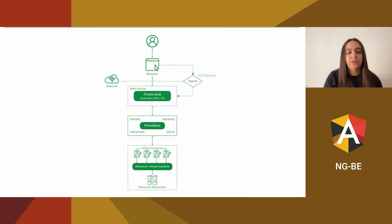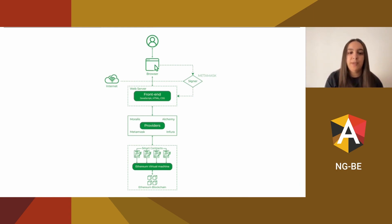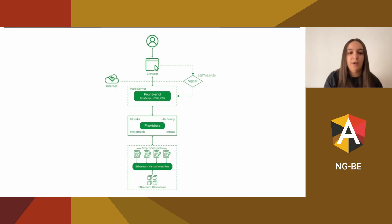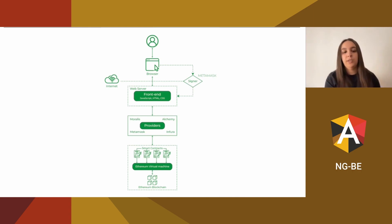To communicate between the front end and the blockchain, we have providers. Providers can be the provider of our wallet — in this case, from MetaMask. If we are connected with our wallet to the application, we can have the provider from the wallet, or we can use some public nodes to communicate with the smart contracts and read the information from the blockchain.